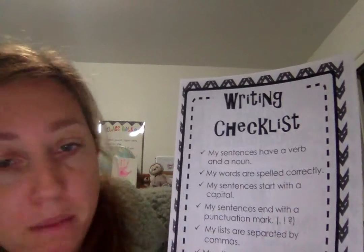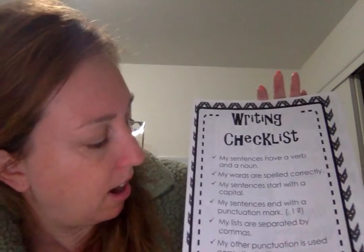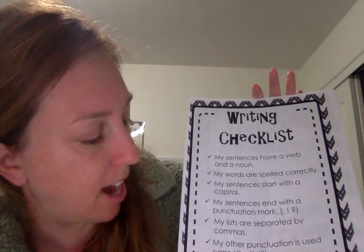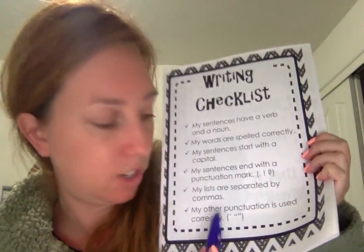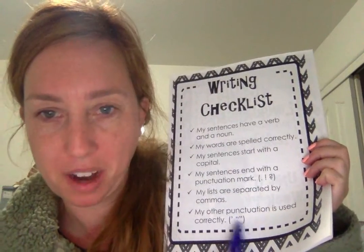Your lists are separated by commas. So if you say 'my cat likes milk, fish, water, kibble, and cheese' — period — they have to have the comma. And then lastly, your other punctuation is used correctly. So we started doing talking quotes and we'll go more into that.